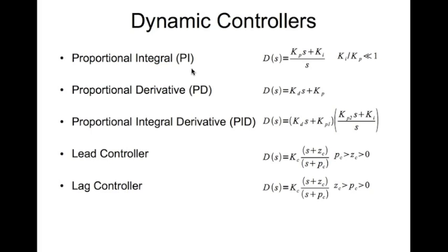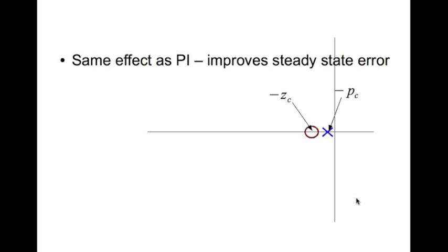The lag controller behaves like the PI controller — you use it to improve steady-state performance without altering the root locus significantly, so it doesn't affect transient requirements. Its transfer function looks similar to the lead controller, but here the magnitude of zc is greater than pc, meaning pc is closer to the imaginary axis. Typically, both pc and zc are very close to the imaginary axis so as not to impact the original root locus.